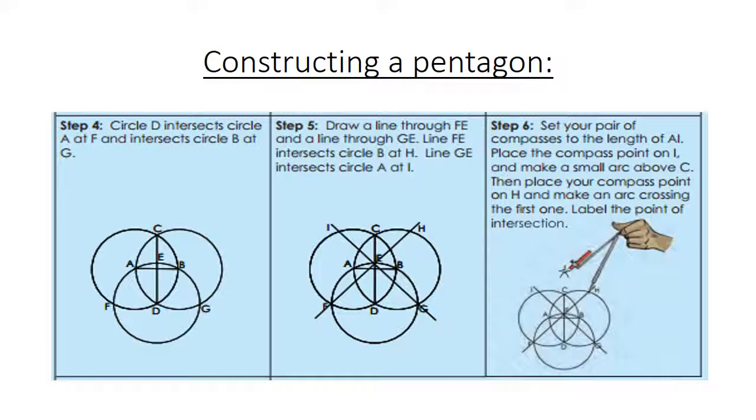Step 6. Set your pair of compasses to the length of AI. Now place the compass point on I and make a small arc above C. Then place your compass point on H, make an arc crossing the first one, and label the point of intersection J.